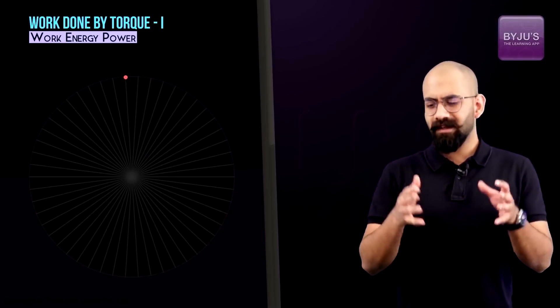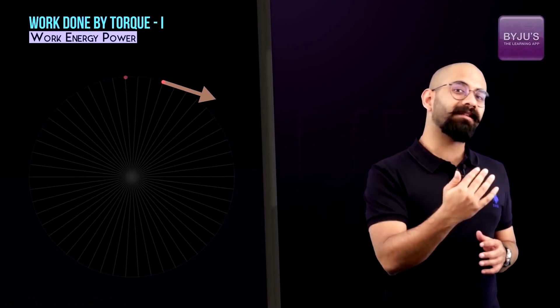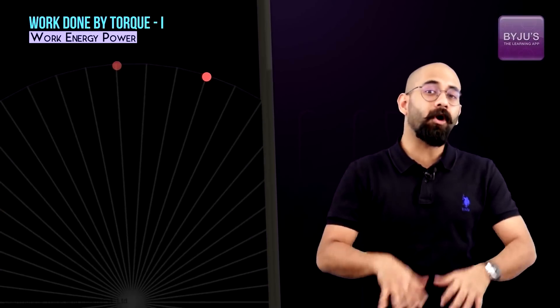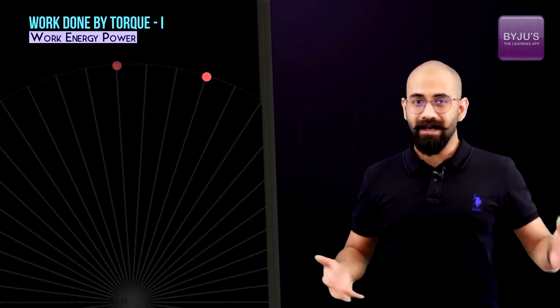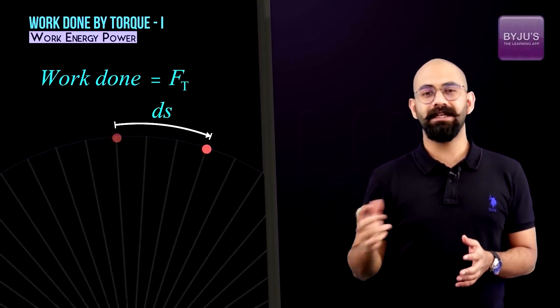Work done is the dot product of force and displacement — the displacement of the point of application. This is a special case that makes things simple because the force is always tangential to the disc, so the point of application will always move in the direction of force. Therefore, the work done will be Ft times the distance traveled by the point, which we call ds.